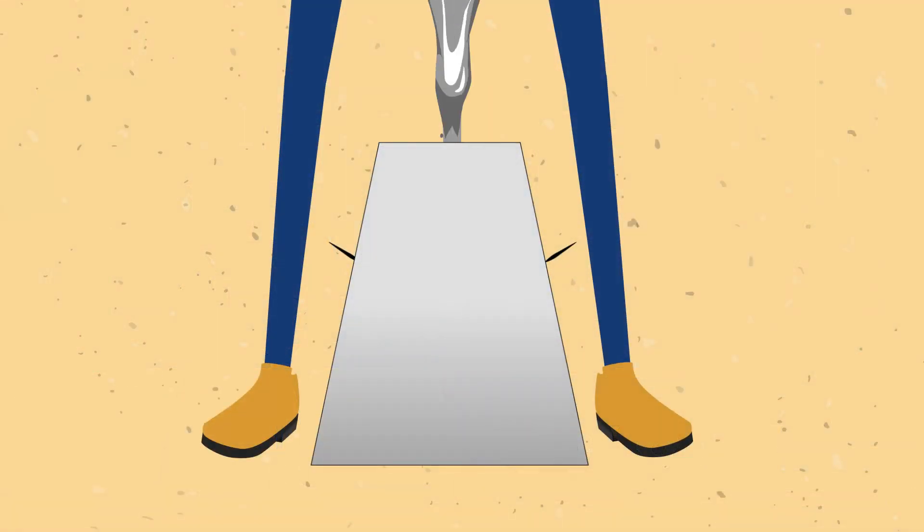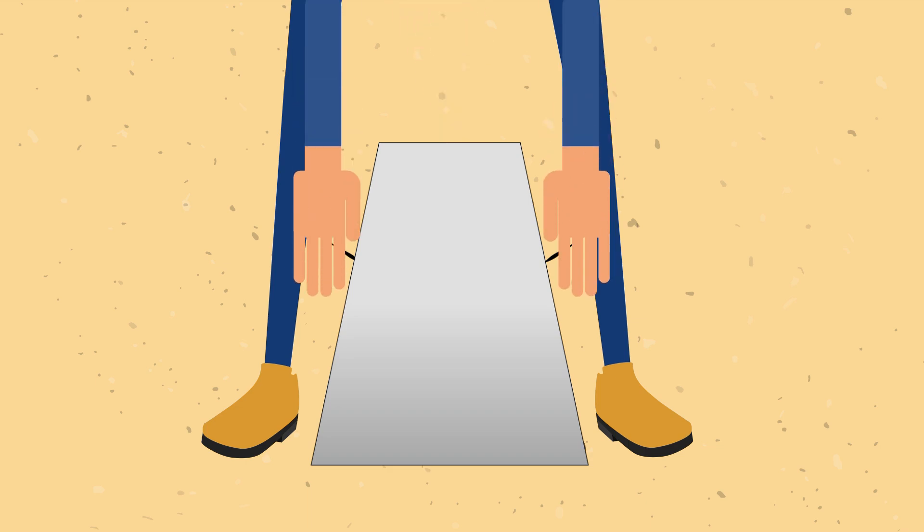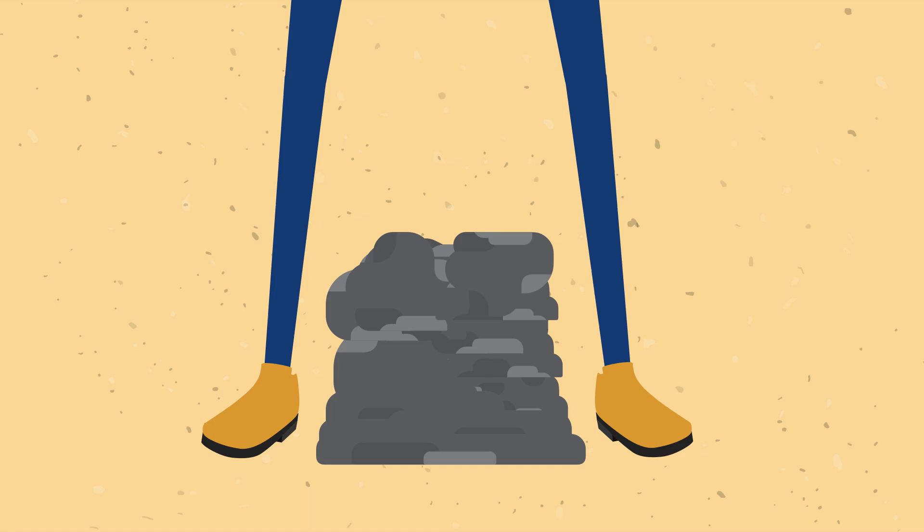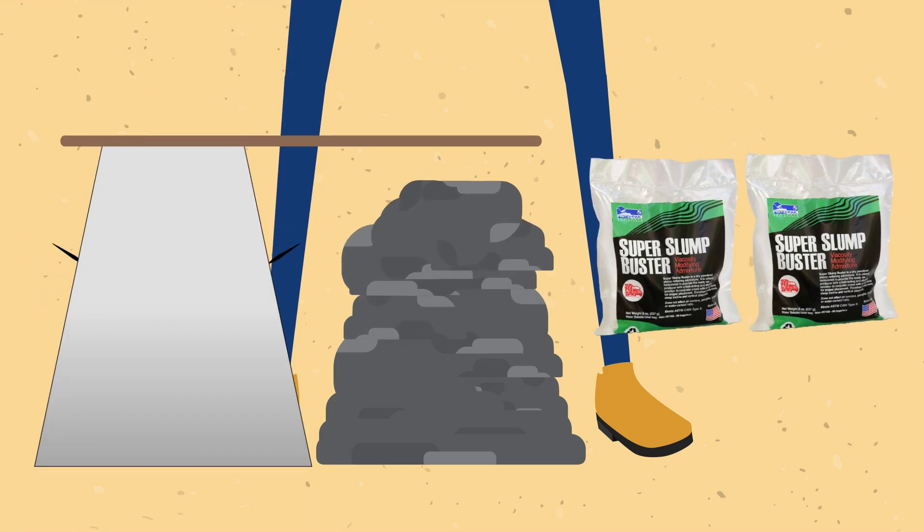Each bag of Super Slump Buster will tighten the slump of a full truckload by about 1 inch. For example, just two bags can improve a 3 inch slump to a 1 inch slump in just a few minutes.